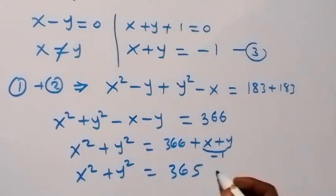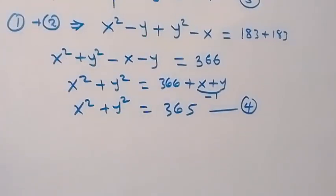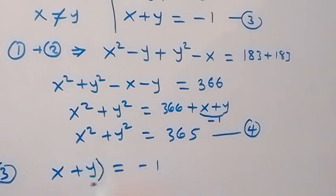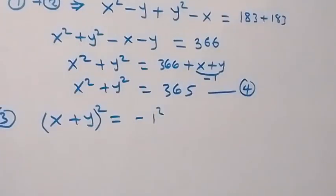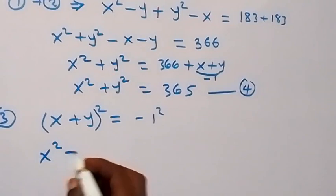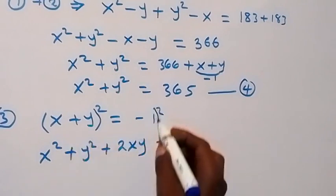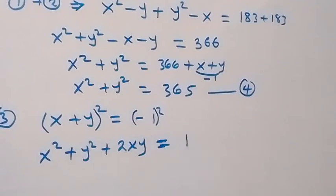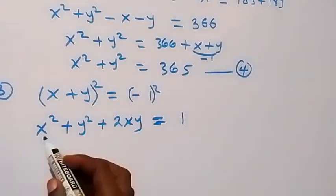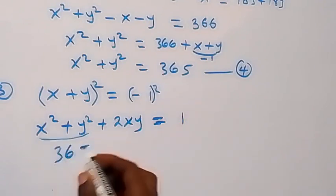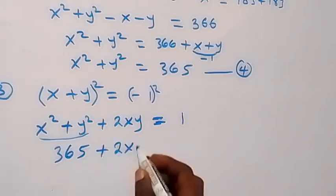We label this as equation 4. In the next step, from equation 3, let's square both sides. From equation 3, we have x plus y equals to minus 1, then square both sides. The square on the left side becomes x squared plus y squared plus 2xy, and minus 1 squared equals plus 1. We substitute from equation 4: x squared plus y squared equals to 365, so 365 plus 2xy equals to 1.